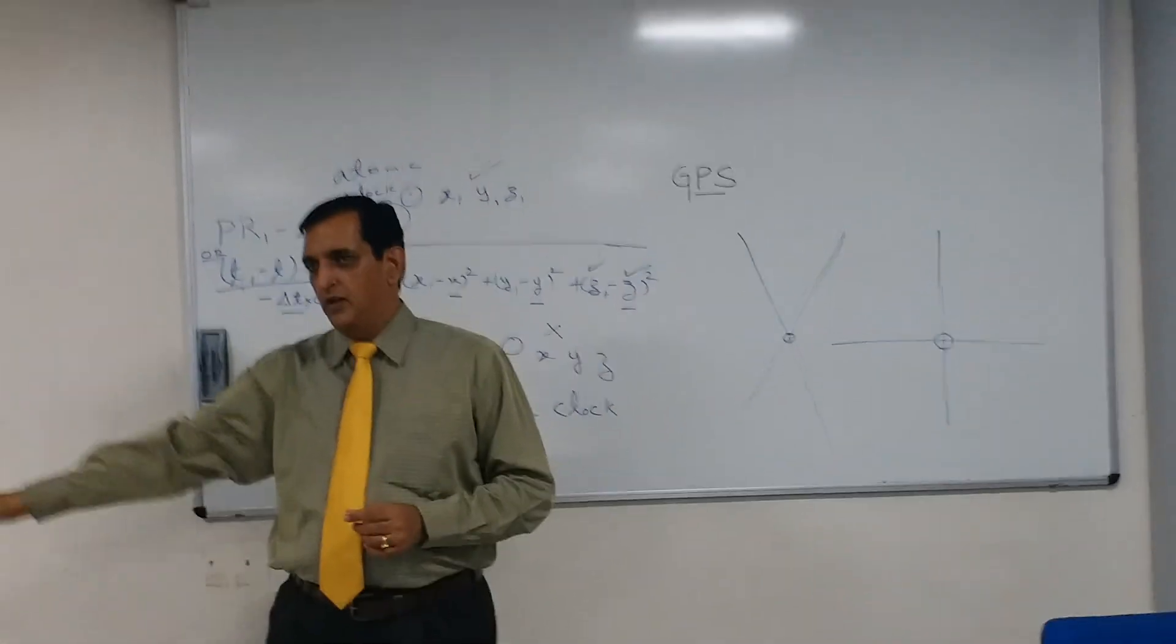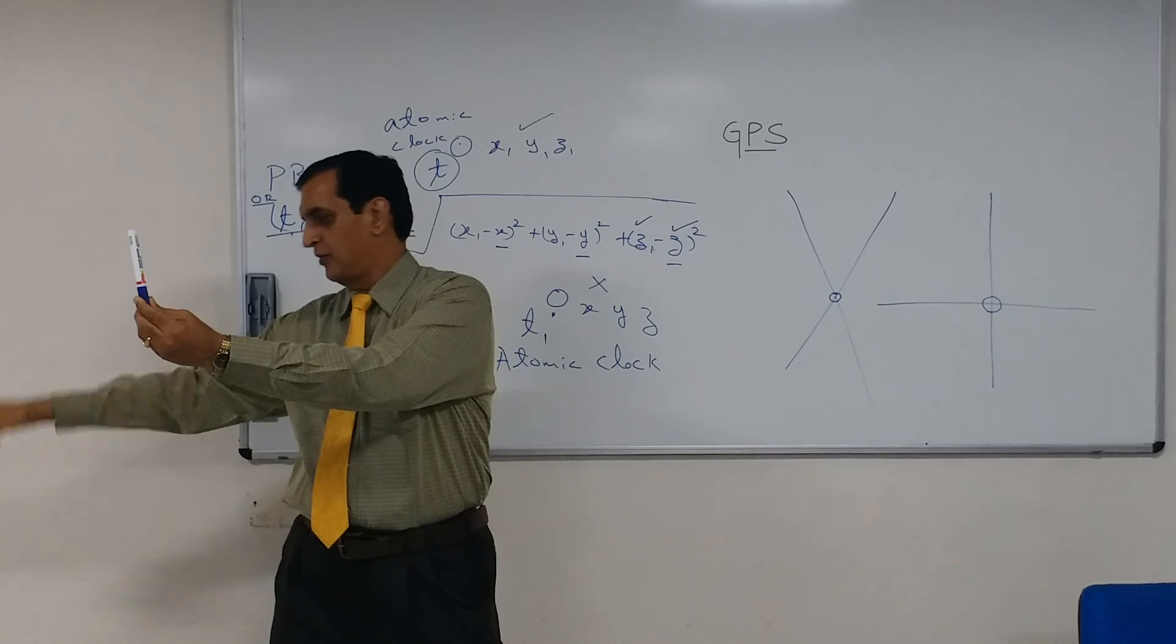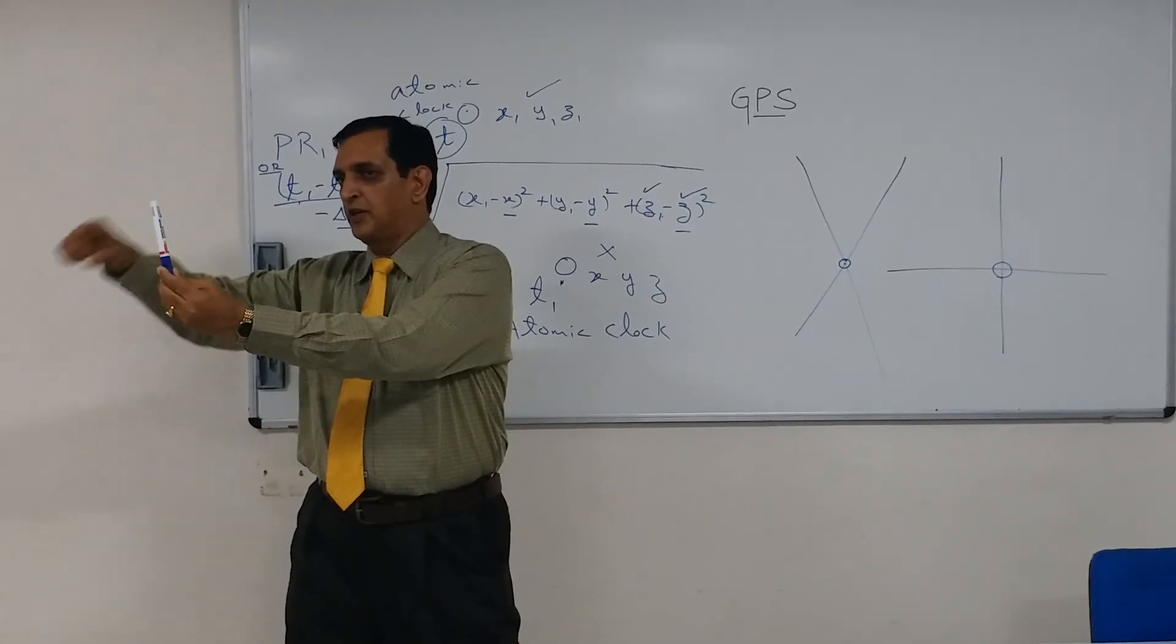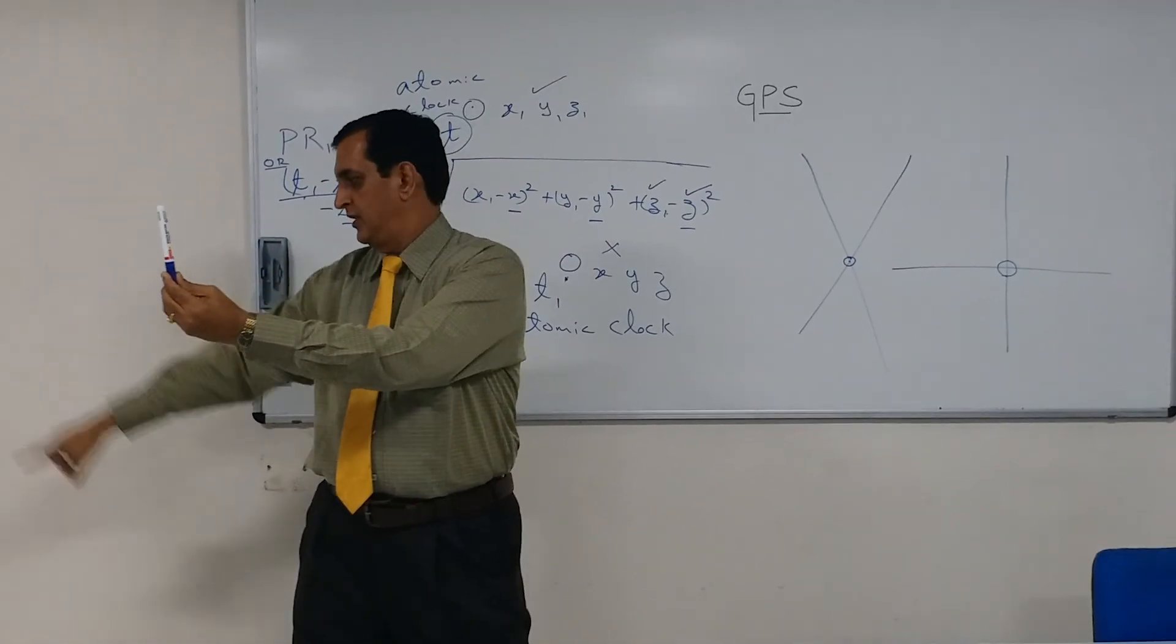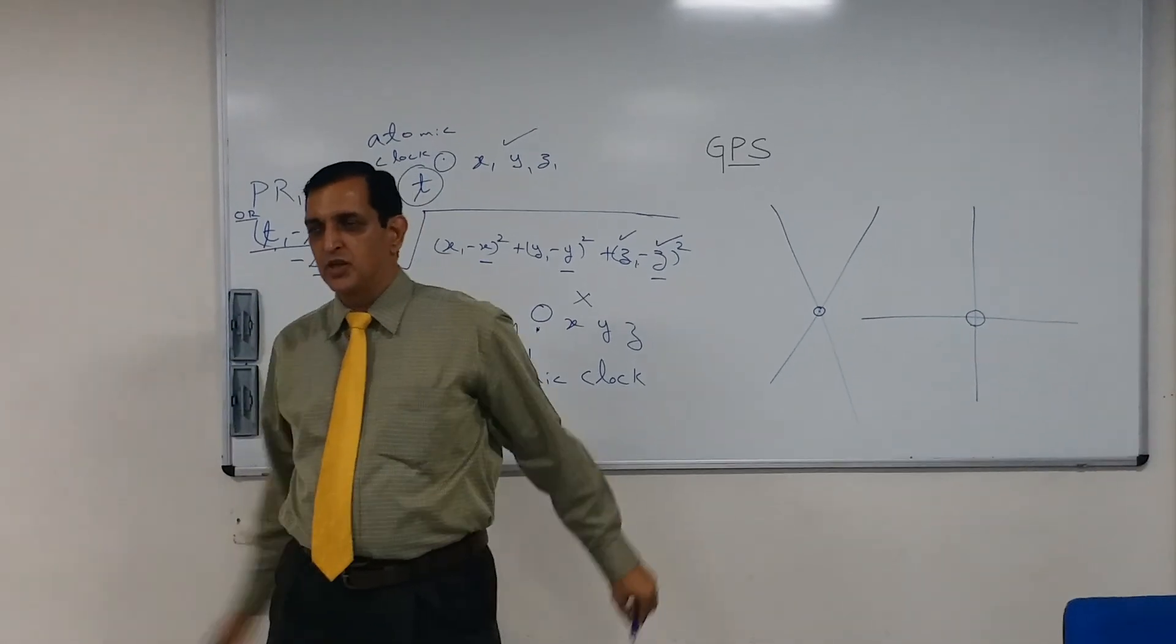And if I take this point here, top of this and I draw a line from there here, I can split that up into three components, one, two, three.